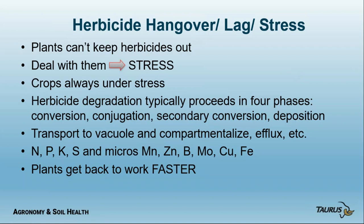When a plant has to degrade a herbicide, it converts it and ties it up with an amino acid, sugar, or enzyme, then deposits it in the vacuole where it's safe. The key nutrients needed are N and P to build cells, P for energy, potassium, and sulfur to go with the N. Micronutrients are also key: manganese, zinc, boron, molybdenum, copper, and iron. All of these are metals except boron. Their role in plants is electron transport and oxidation-reduction in enzyme processes.